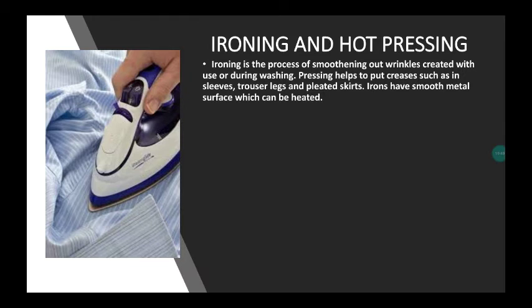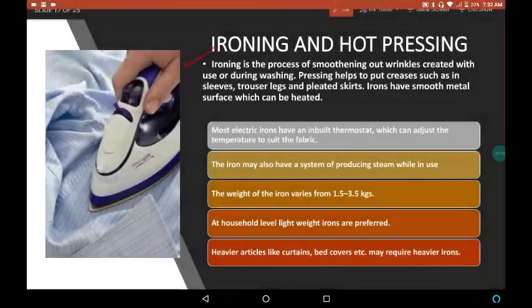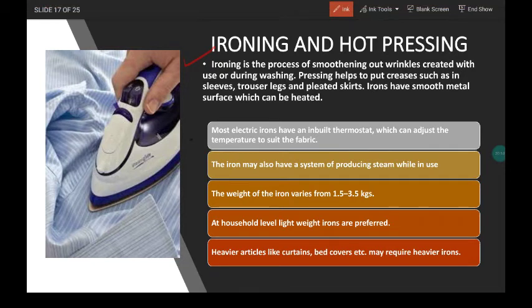Next is ironing and hot pressing. Ironing is the process of smoothening out wrinkles created with use or during washing. Pressing helps to put creases such as in sleeves, trousers, legs and pleated skirts. Iron has a smooth metal surface which can be heated. How to control the temperature while ironing? Most electric irons have an inbuilt thermostat which can adjust the temperature to suit the fabric. The iron may also have a system of producing steam while in use. The weight of the iron varies from 1.5 to 3.5 kg depending on the fabric requirement.